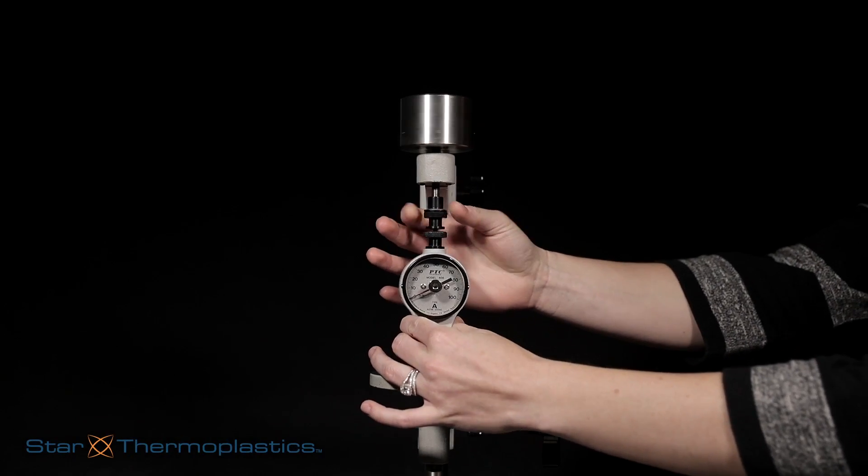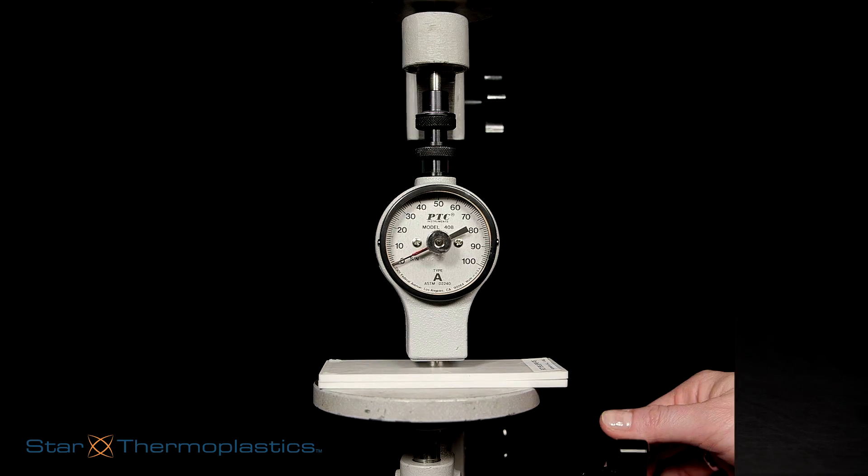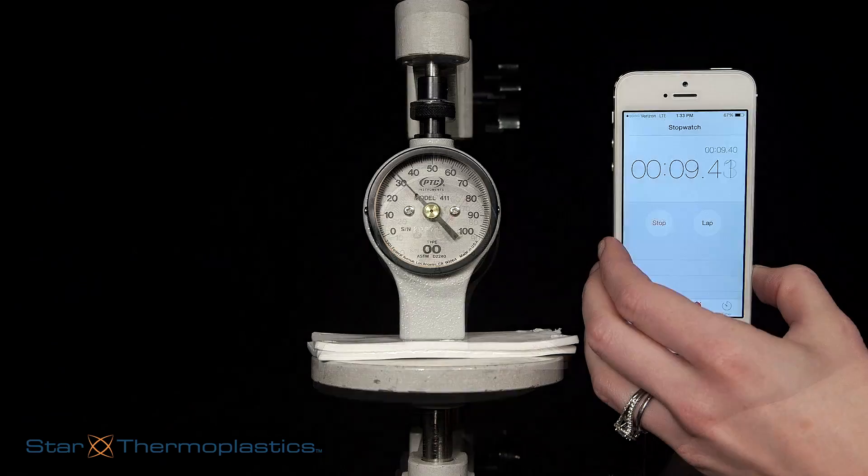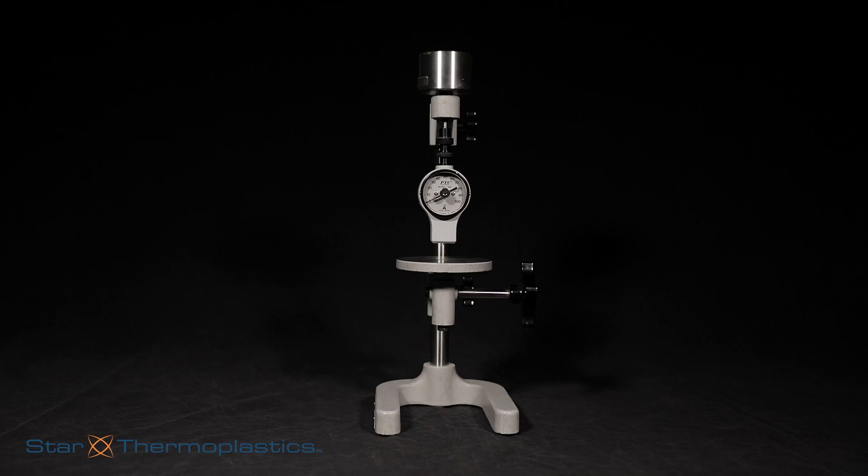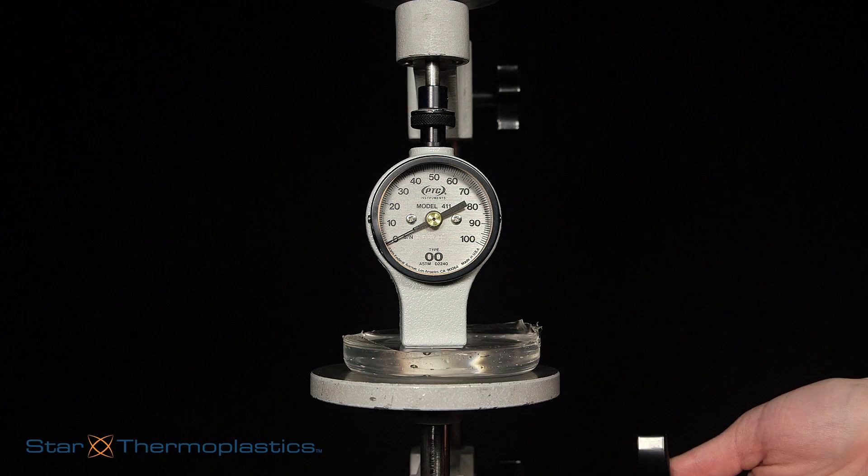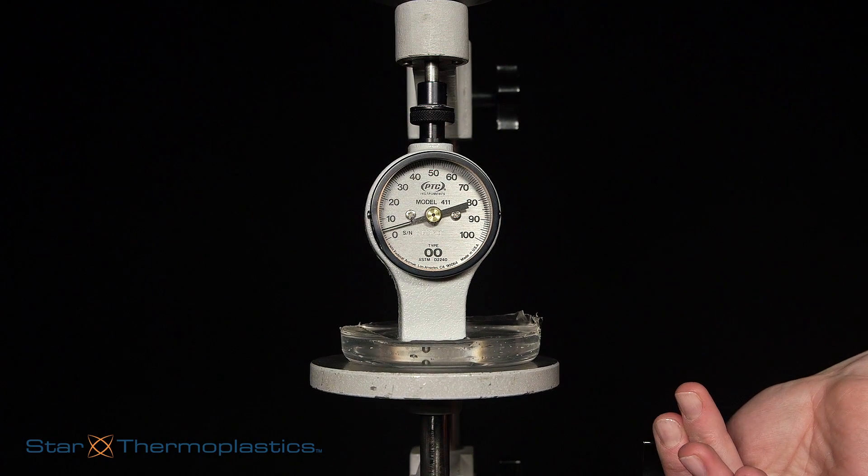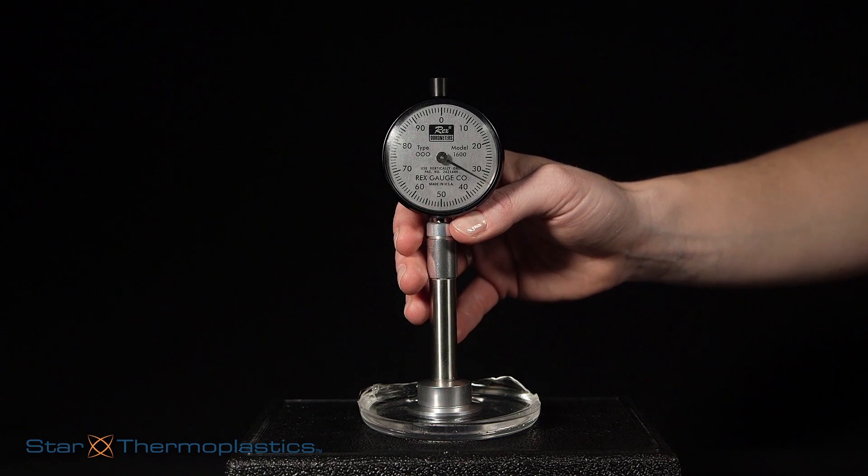We're going to show you a typical testing method for thermoplastic elastomers. We can take an instant hardness or a 10-second hardness. This can be done with both a handheld or stand durometer. For our double-aught materials, we will be using a stand durometer, and for our triple-aught, a handheld durometer.